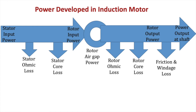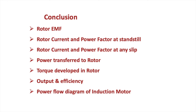The power flow diagram of the induction motor starts with stator input power, subtracts stator copper loss and stator core loss to give the air gap power (input to the rotor). From the air gap power, rotor copper loss and rotor core loss are subtracted to give rotor output power. Finally, friction and windage losses are subtracted to give the power output at the shaft, which is the motor output. Today we covered rotor EMF, rotor current and power factor at standstill and at any slip, power transfer to the rotor, torque, shaft output power, efficiency, and the power flow diagram.